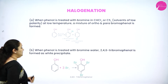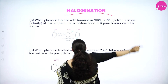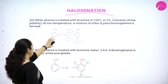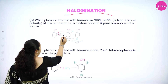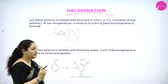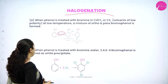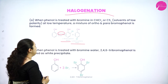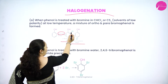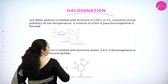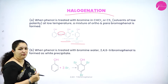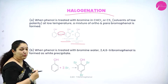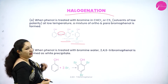Next we go to the next electrophilic substitution reaction: halogenation. In halogenation there are two types. First, when phenol is treated with bromine in carbon disulfide at 273 Kelvin — a very low temperature — you will get ortho-bromophenol and para-bromophenol, that is bromine is substituted in the ortho position or in the para position. You get a mixture of ortho-bromophenol and para-bromophenol.